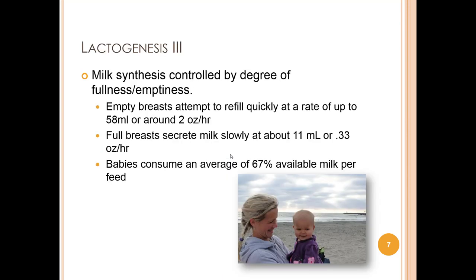There are three stages of lactogenesis. What is important for this module is that milk synthesis is controlled by the degree of fullness and emptiness of the breast in lactogenesis 3. Empty breasts attempt to refill quickly at a rate of about 58 mLs or around 2 ounces an hour. Full breasts secrete milk slowly at about 11 mLs or 0.33 ounces an hour. Babies consume an average of 67% of available milk per feed, so the degree of fullness and emptiness of the breast determines the rate of milk synthesis.